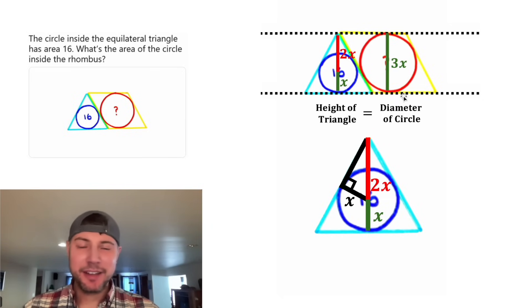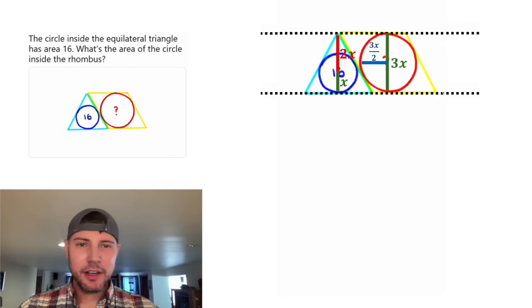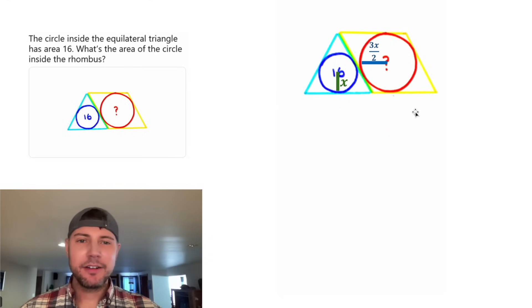So the diameter is equal to 3x. And that means this radius would be equal to half of that, or 3x over 2. Now I think we're pretty much done. Let's clean up this work, and we don't need any of this either. Now we have two circles, each with their own radius.